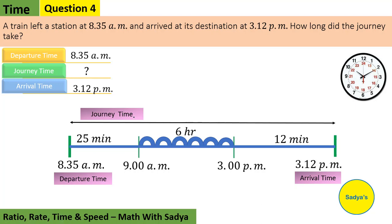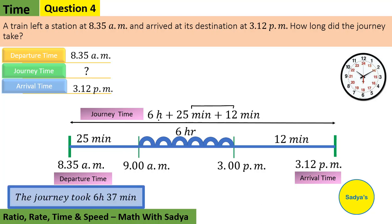So what will be the journey time? It would be 6 hours plus 25 minutes plus 12 minutes, or 25 plus 12, which is 37 minutes. So the journey time is 6 hours and 37 minutes. The journey took 6 hours 37 minutes.